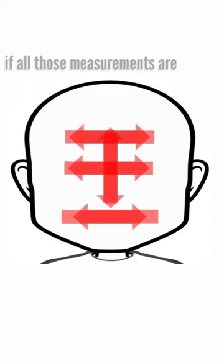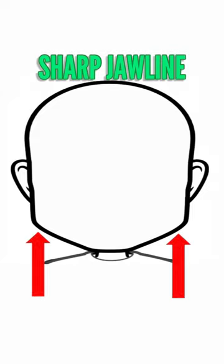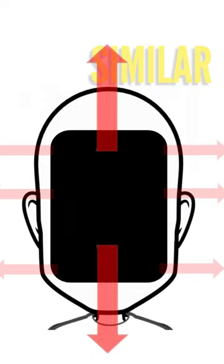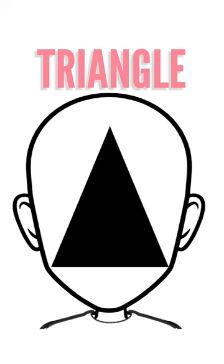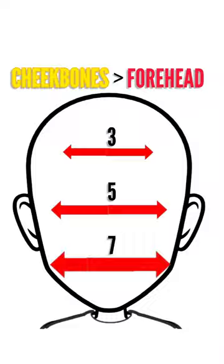Now, if all those measurements are fairly similar and you have a sharp jawline, you have a square face shape. If your face length is the largest and all other measurements are smaller but similar, you have an oblong face shape. If your forehead is larger than your jawline and you have a pointed chin, you have a heart face shape. Triangle face shapes have a large jawline with even smaller cheekbones and an even smaller forehead.